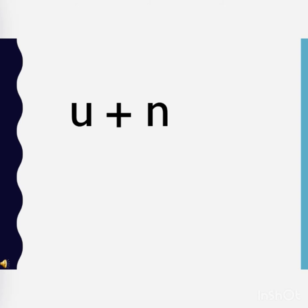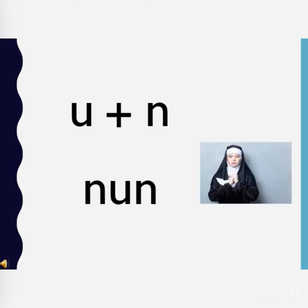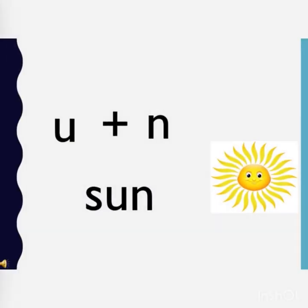U says 'uh' and N says 'n,' so together they say UN. When we add the letter N to UN, it reads N-UN — none. And the last word: when you add S to UN, it reads S-UN — son, or sun.